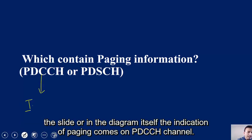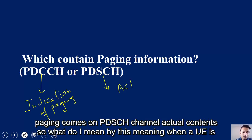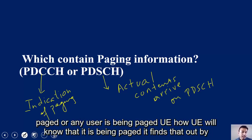The indication of paging comes on PDCCH channel, whereas the actual contents which arrive for the UE as a result of paging come on PDSCH channel. What do I mean by this? When a UE is paged or any user is being paged...